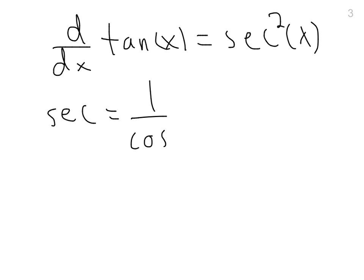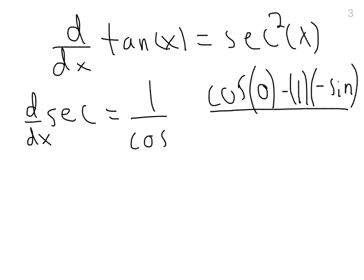So we've got low is cosine, high is one. Cosine times, what's the derivative of one? The derivative of a constant is zero, minus high, which is one, times derivative of cosine, which is negative sine. And then that is all over, so to make this more formal, d dx of secant is equal to d dx of one over cosine, is equal to low d high minus high d low over low squared, over cosine squared.